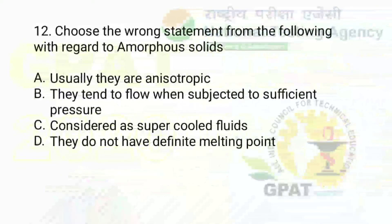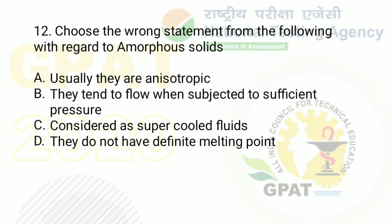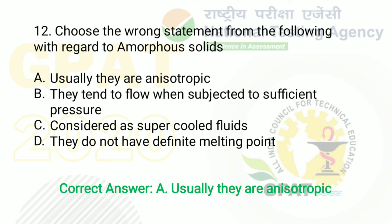Question number 12: choose the wrong statement from the following with regards to amorphous solids. Option A: usually they are anisotropic. Option B: they tend to flow when subjected to sufficient pressure. Option C: considered as super-cooled fluids. Option D: they do not have a definite melting point. The right answer is option A — usually they are anisotropic — as this statement is wrong for amorphous solids.